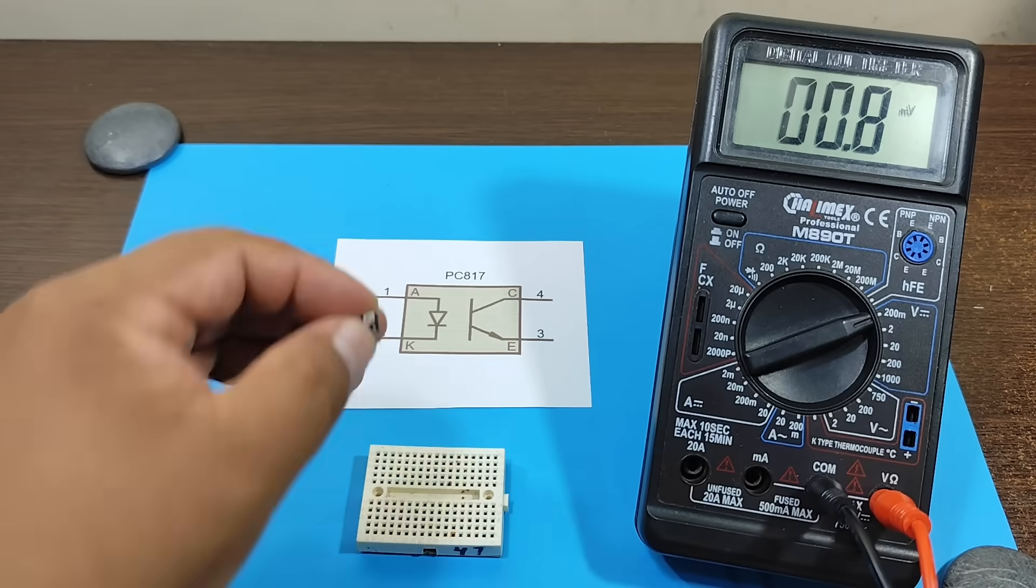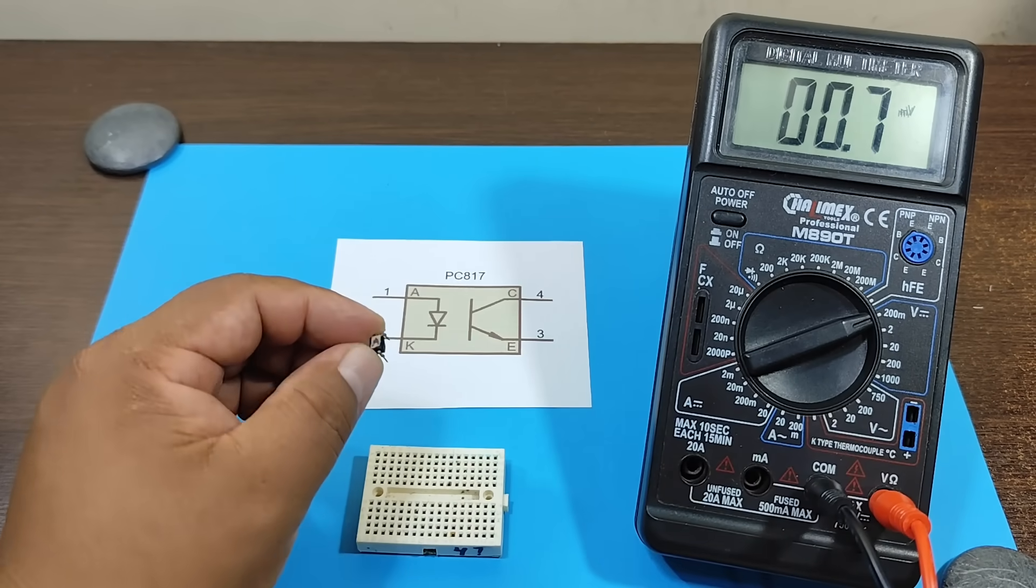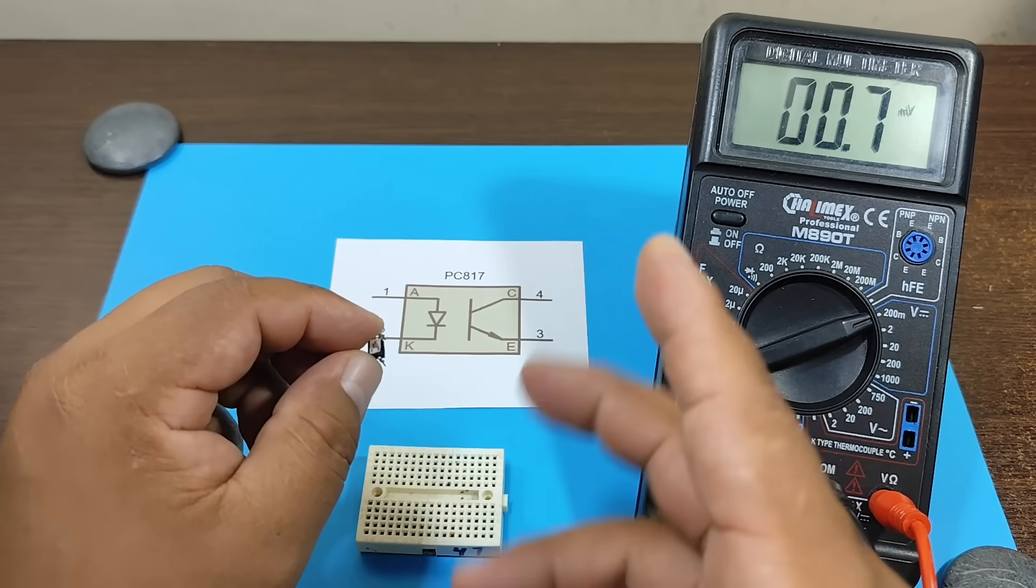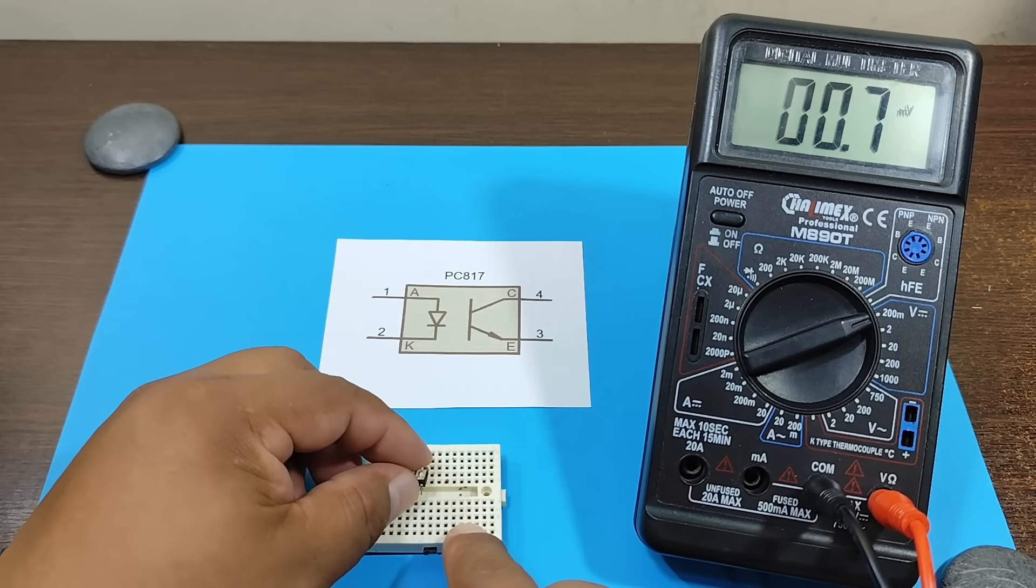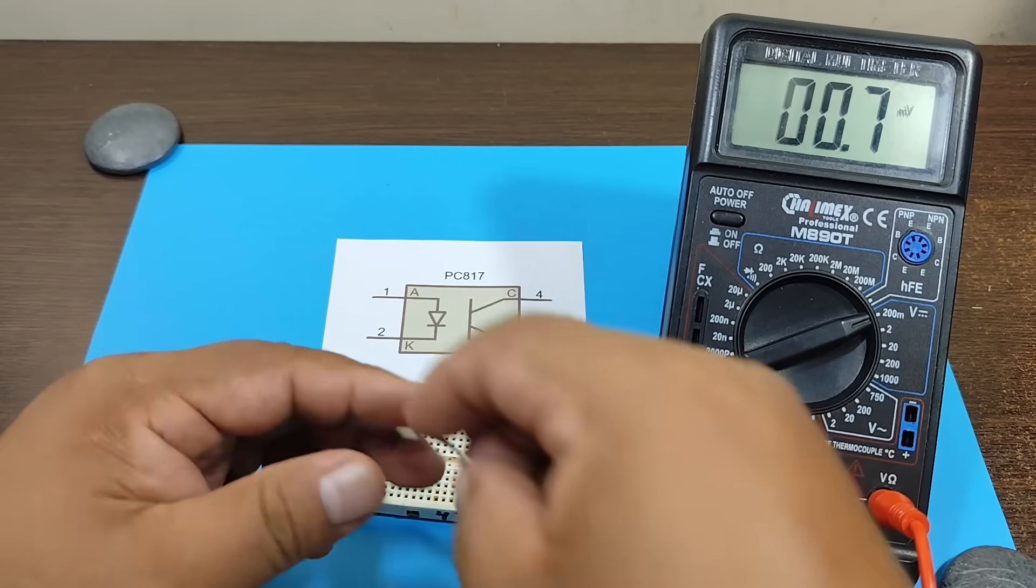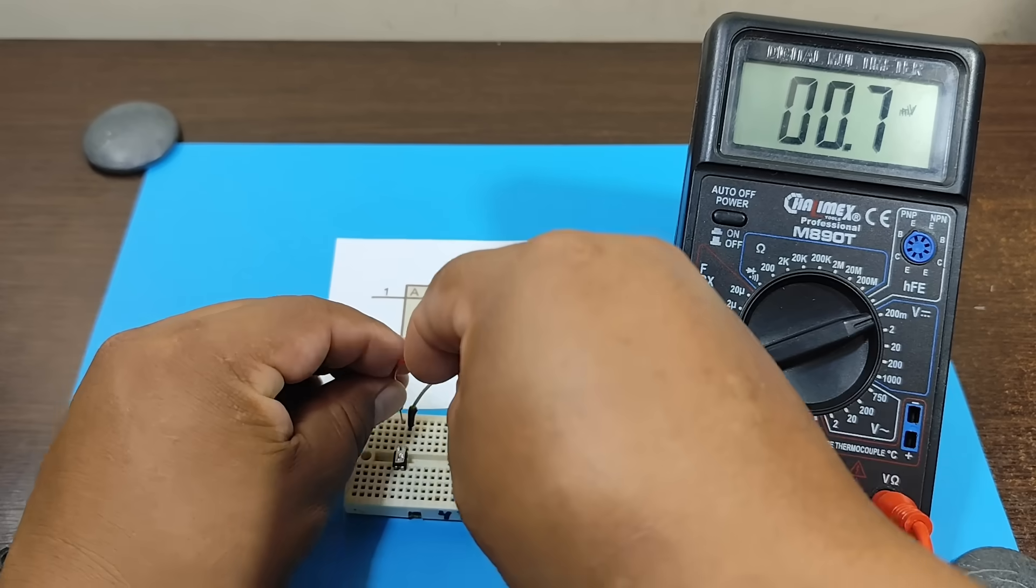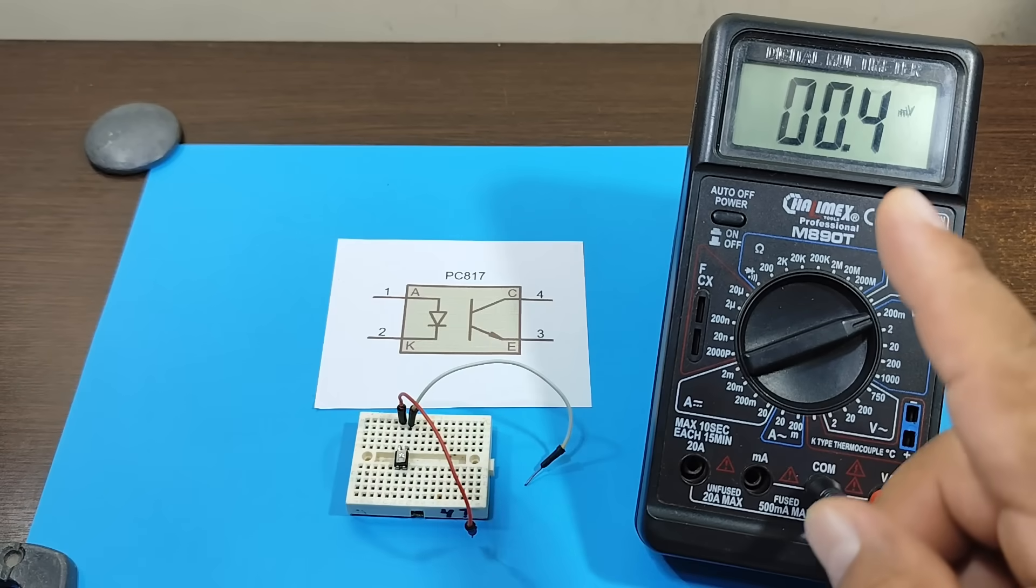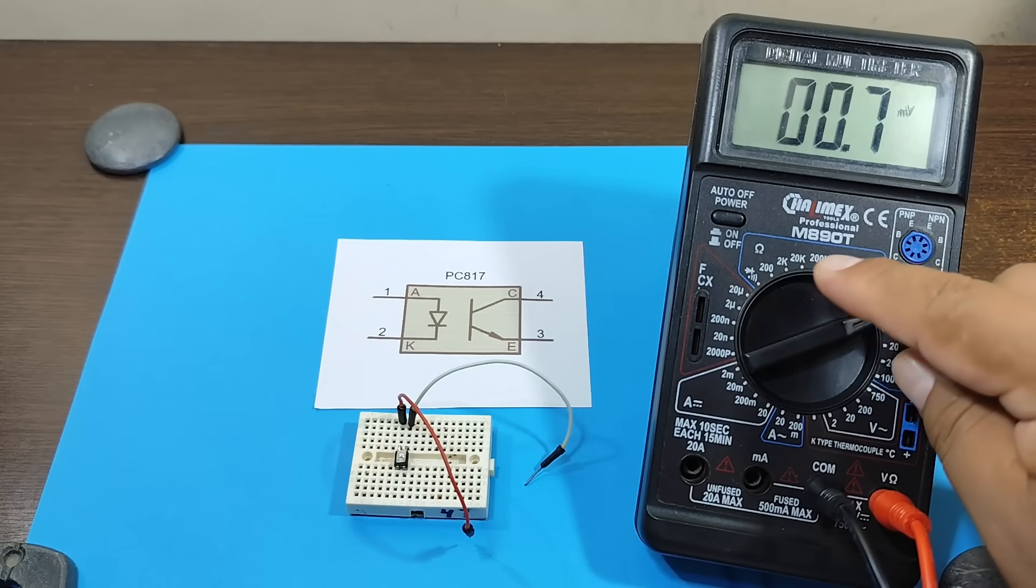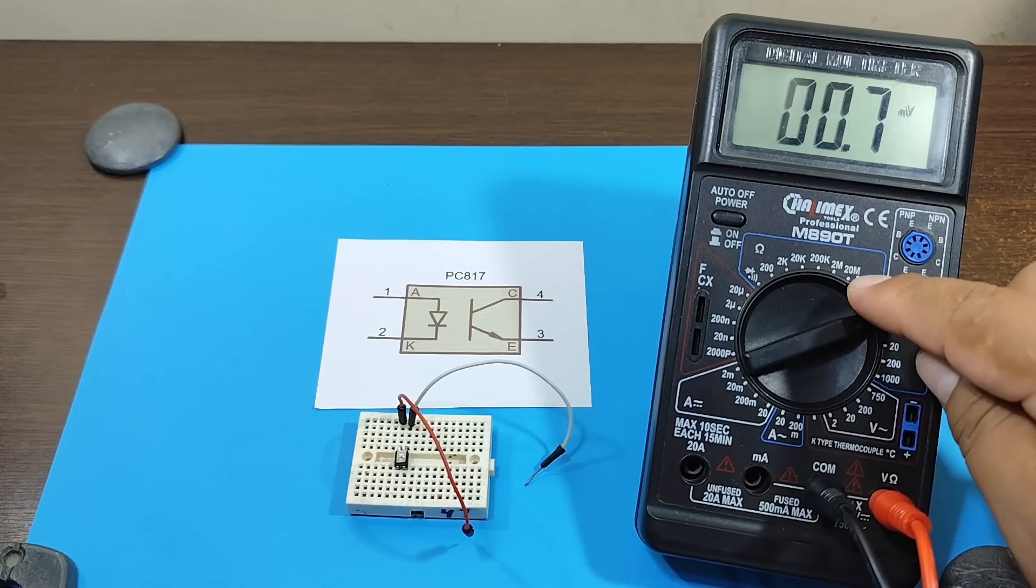Now, we're going to see how the transistor is working, and if it really does work based on light. To do this, we'll set our multimeter to ohms on the megohm scale.